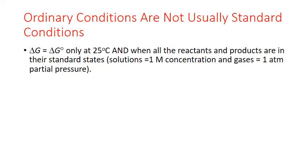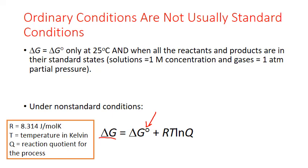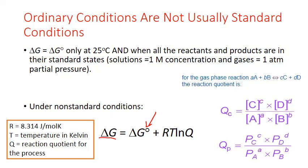We can factor in differences in concentration and pressure by using reaction quotients. Under non-standard conditions, we can calculate the Gibbs free energy change as the standard Gibbs free energy change plus R — the ideal gas constant in units of joules per mole Kelvin — times temperature in Kelvin, times the natural log of Q. Q is the reaction quotient for any reversible process: the equilibrium expression with the actual concentrations or pressures of the system substituted in.